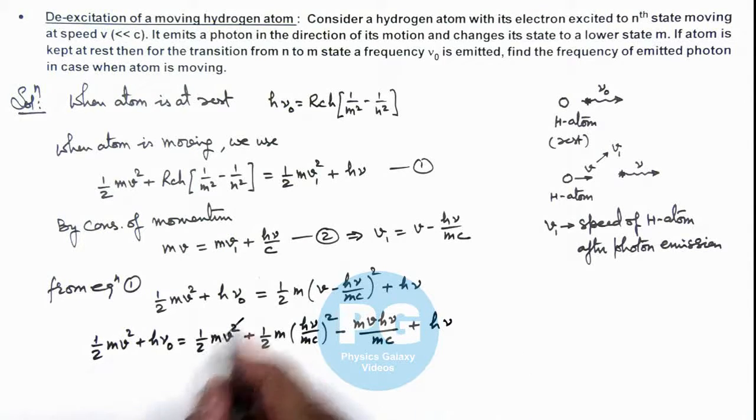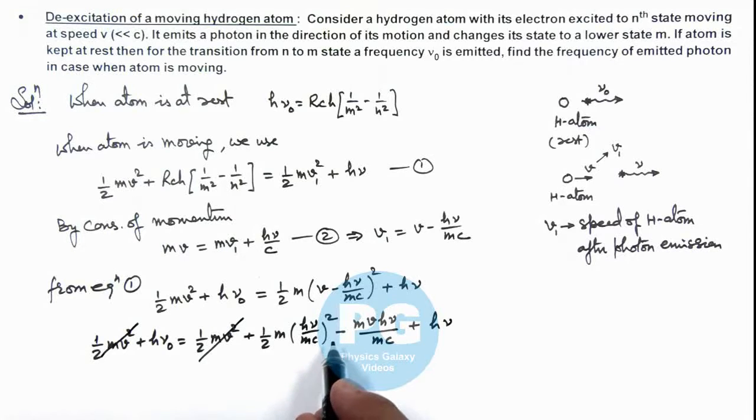Now in this situation this (1/2)m*v^2 gets cancelled out. This term, in this term here m also gets cancelled out. And here we can ignore this term as in denominator c^2 is very high, so we can ignore this term. So finally see what we are getting.